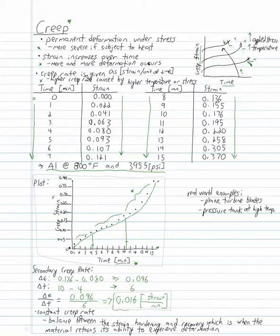Some real-world examples would be a plane turbine blade. They experience stress at high temperature, as well as a pressure tank at high temperature, because it's under constant stress. Strain occurs and then failure could happen in such a scenario.